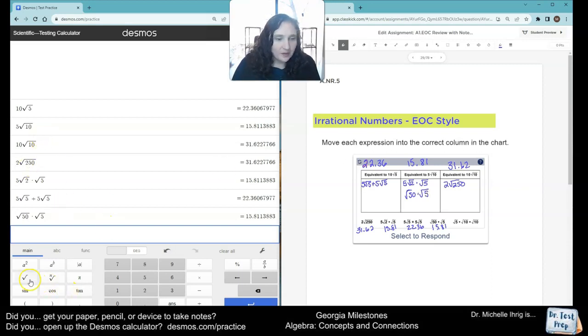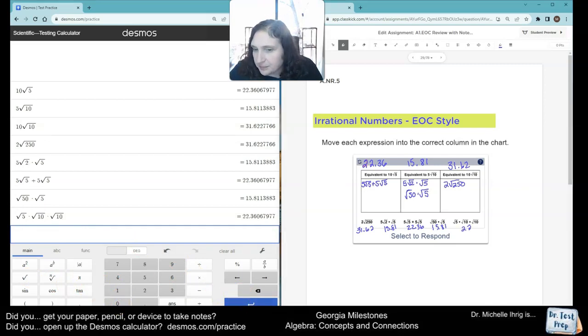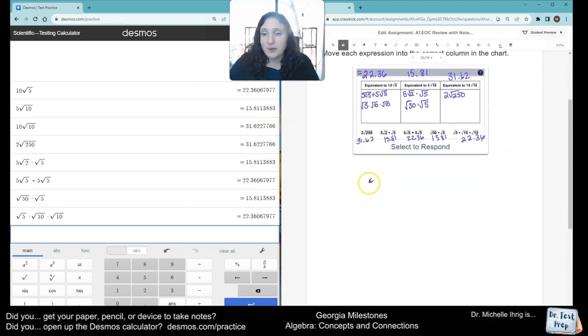Here's the last one. The square root of 5, click out, times the square root of 10, click out, times the square root of 10. Gives you 22.36, which goes right here. Now, because I want to be a good math teacher, here comes the long way to do this for a couple problems.